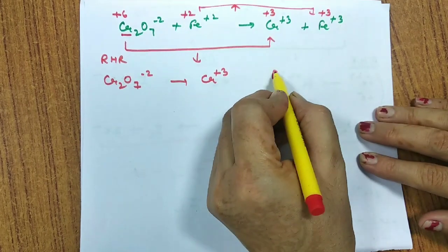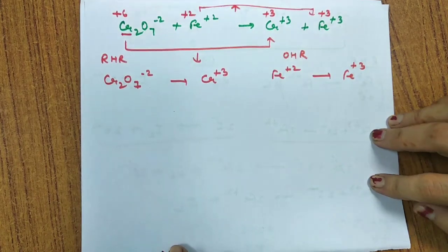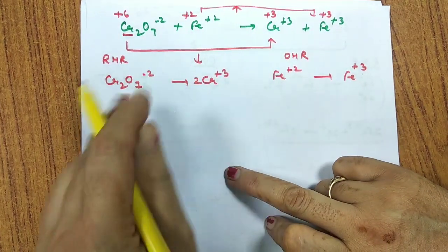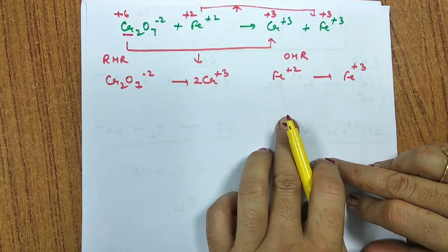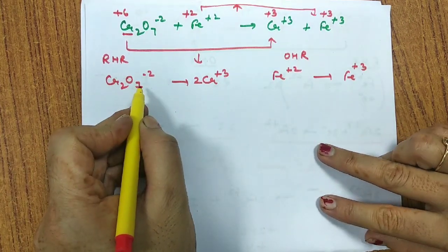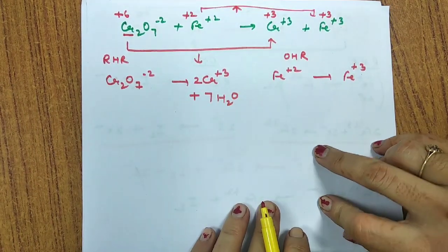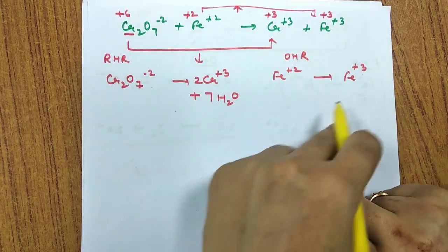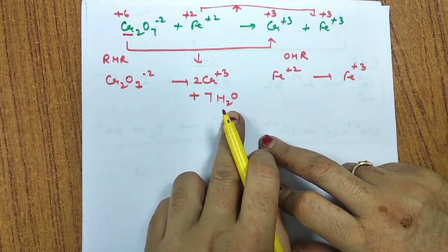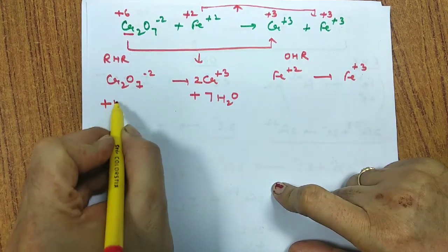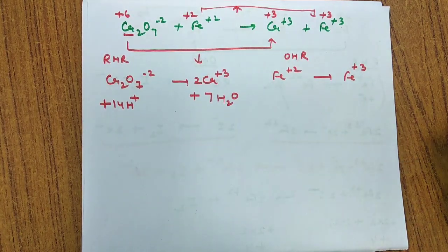Split into two half reactions: Cr₂O₇²⁻ → 2Cr³⁺ (reduction half reaction) and Fe²⁺ → Fe³⁺ (oxidation half reaction). Balance atoms: 2 chromium on each side, 1 iron on each side. Then balance oxygen by adding 7H₂O to the right side. Balance hydrogen by adding 14H⁺ to the left side: Cr₂O₇²⁻ + 14H⁺ → 2Cr³⁺ + 7H₂O.